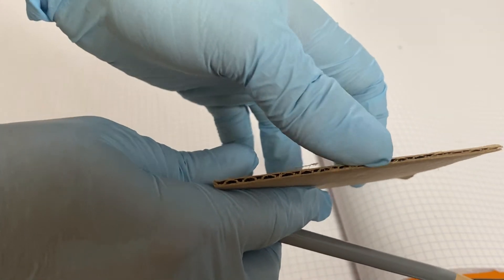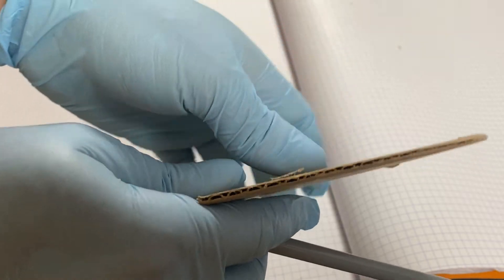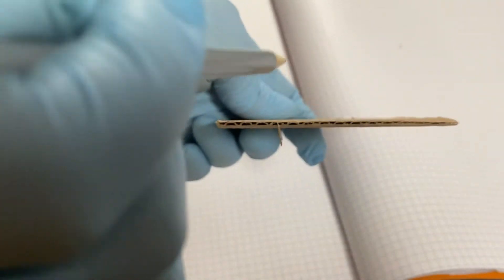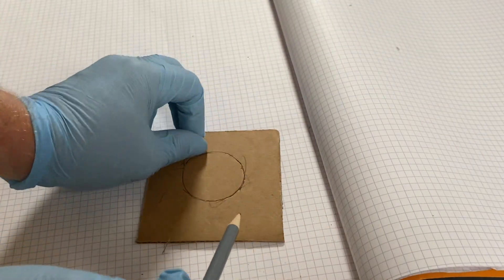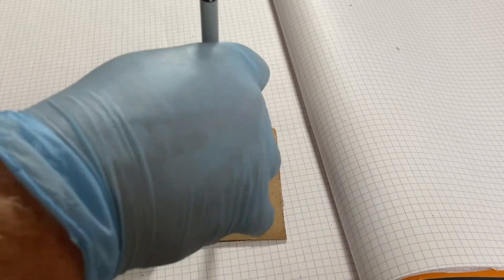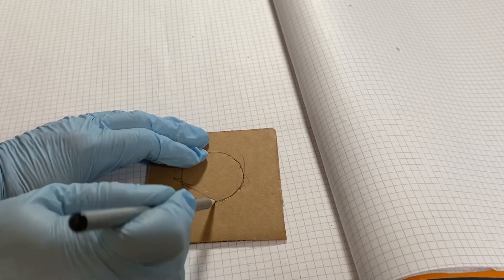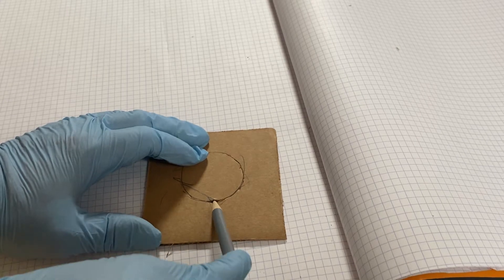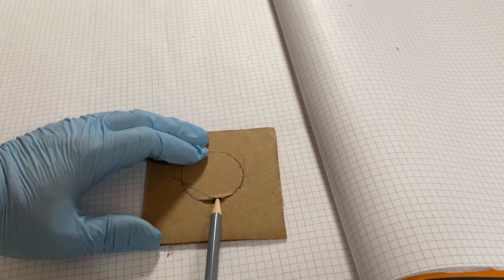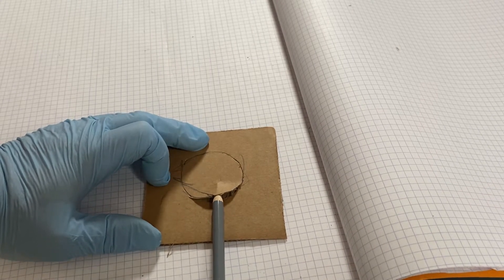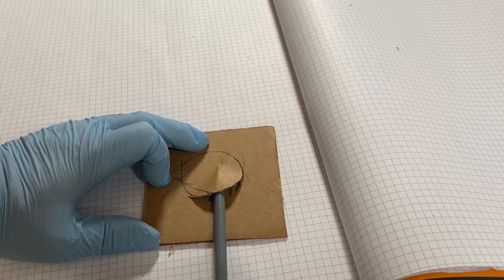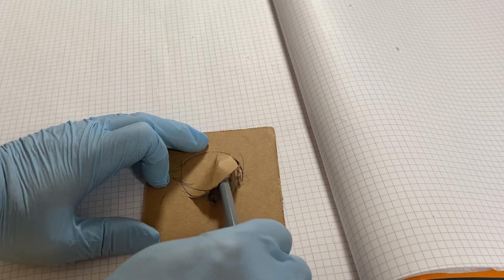But this side does have the corrugated lines, which we can use as kind of a guide. Just stick the tip of your pencil down into that cardboard and lift it up. And just push. You can actually hear it start to be lifted up.